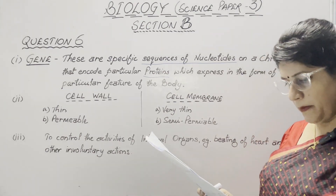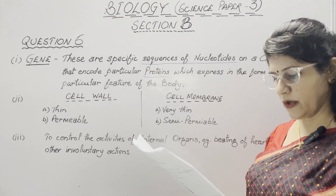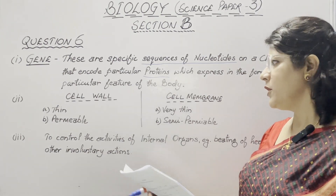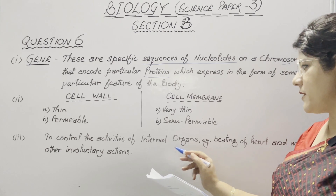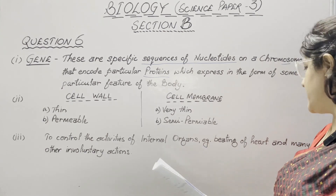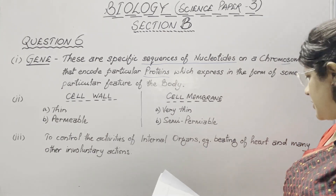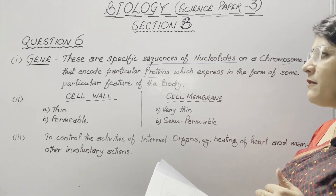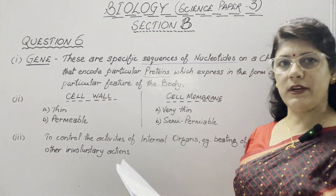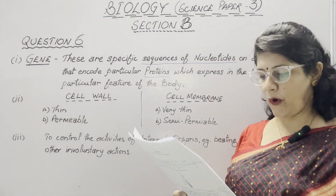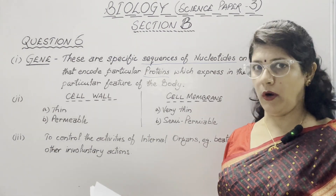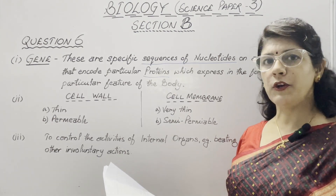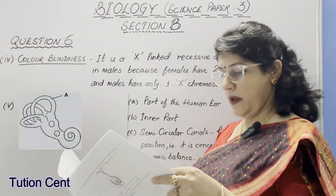In the third part, state the function of the medulla oblongata with a suitable example. It controls the activities of internal organs — for example, beating of the heart, breathing, and many other involuntary actions in our body are performed by the medulla oblongata. Any injury to the medulla oblongata results in death.